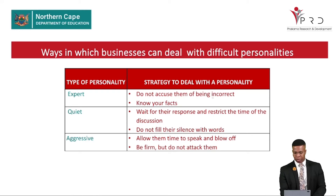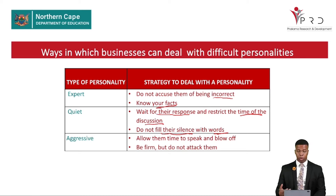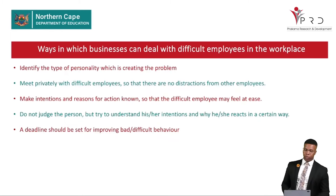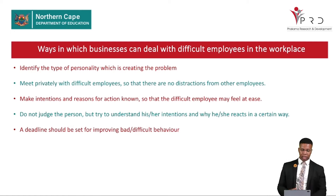For an expert: do not accuse them of being incorrect and know your facts as a manager when dealing with such an individual. For a quiet individual: wait for their response, restrict the time of the discussion, and do not fill their silence with words. For an aggressive individual: do not allow them time to blow off steam uncontrolled, but do not attack them. Those are ways to deal with the specific difficult personality types.